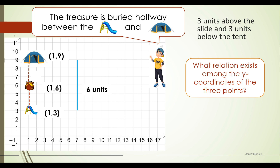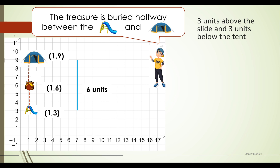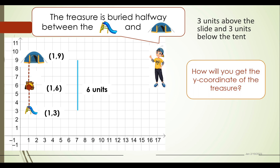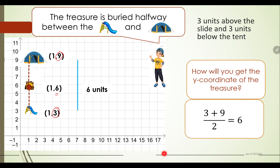What about the relation among the y-coordinates of the three points? We have 9, 6, and 3. How do we get the y-coordinate of the treasure? We take the y-coordinate of the first point (3) and the y-coordinate of the second point (9), and we add them together then divide by 2: 3 plus 9 divided by 2 gives us 6.